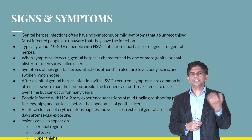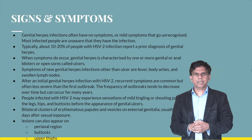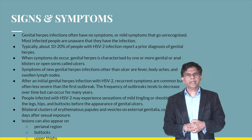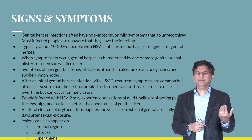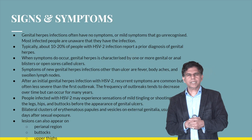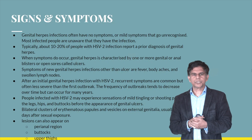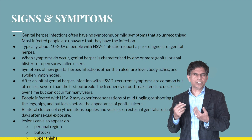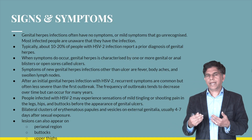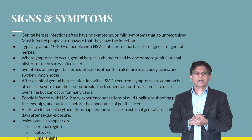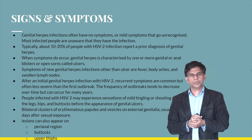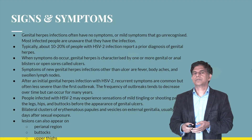After the initial HSV2 infection, recurrent symptoms can develop. These tend to be less severe than the primary presentation, and the frequency of outbreaks decreases over time, though they can continue for many years. People infected with HSV2 may experience mild tingling or shooting pain in the legs, hips, or buttocks before the appearance of genital ulcers. Bilateral clusters of papules and vesicles on the external genitalia typically appear four to seven days after sexual exposure, and lesions can also appear in the perianal or buttocks region.